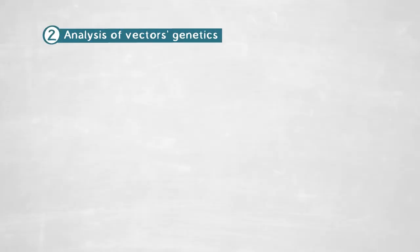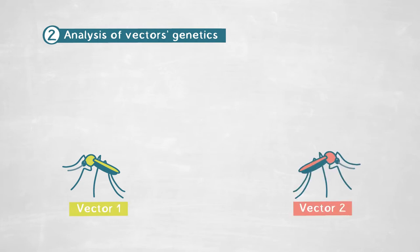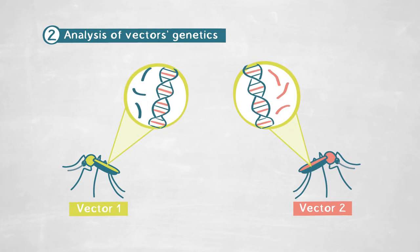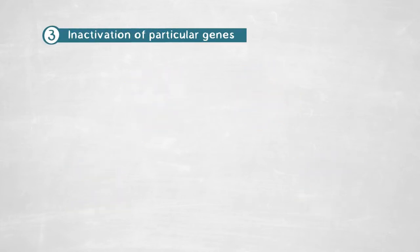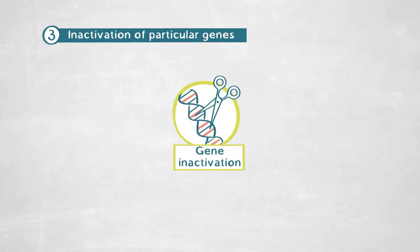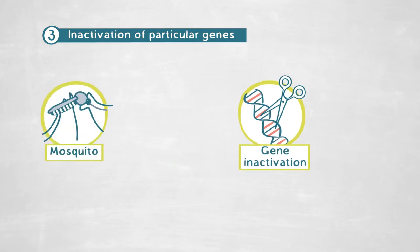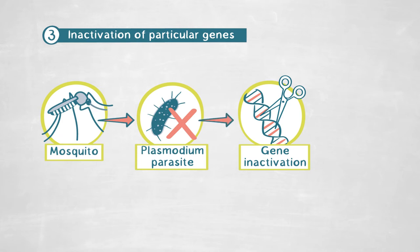We can look at the genetics of these vectors and see differences in their genetic composition. Then we can ask whether, using experimental approaches in the lab, we could better understand what happens in the field. In the lab, we use tools that allow us to inactivate particular genes of interest and experimentally infect mosquitoes with plasmodium parasites, which transmit malaria, to see how that affects parasite development within the mosquito.